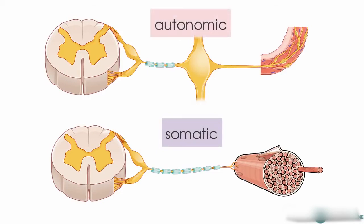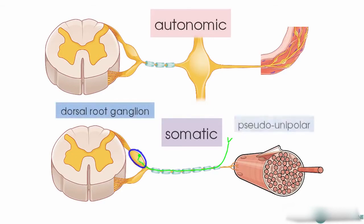Just to refresh your memory on the basic makeup of the somatic nervous system: we've got a peripheral stimulus being picked up by a sensory receptor, and this peripheral stimulus gets brought back into the central nervous system by the sensory neuron. The sensory neuron has the cell bodies in the dorsal root ganglion, and the pseudo-unipolar neuron passes via the dorsal root into the dorsal aspect of the spinal cord.